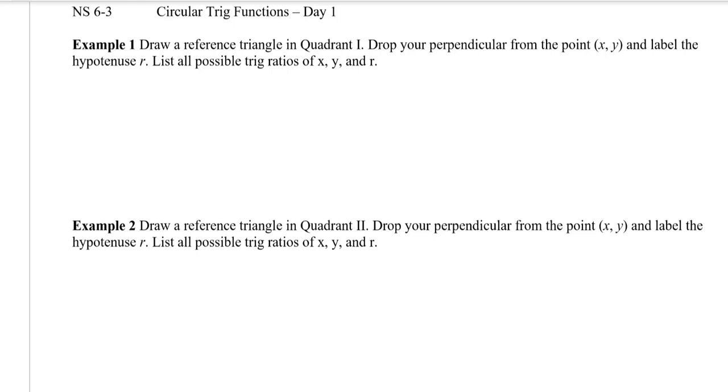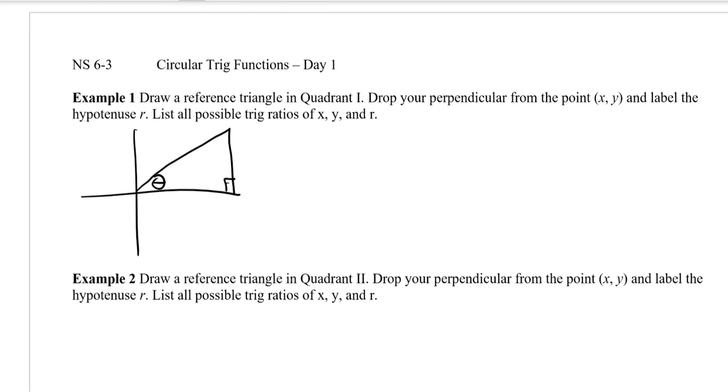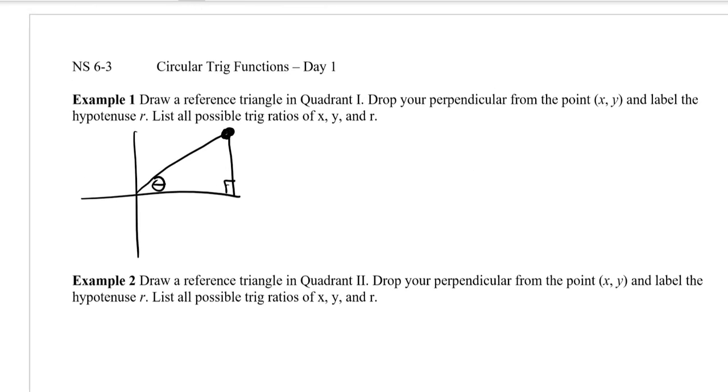So what we're going to do is start by drawing a reference triangle here in quadrant number one. Quadrant number one, we know that's going to be in the upper right hand corner. So our reference triangle is just going to go like this. And we're going to put theta, our angle, right there in the angle that's closest to the origin.